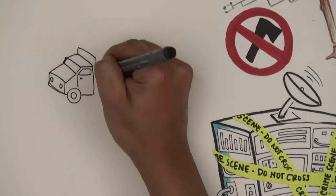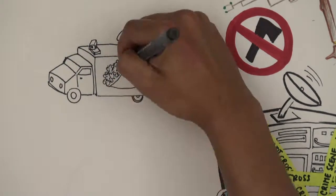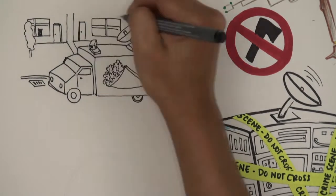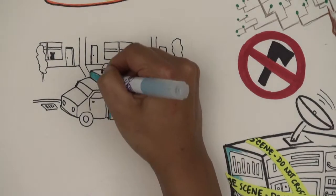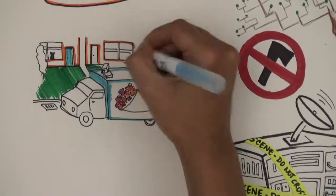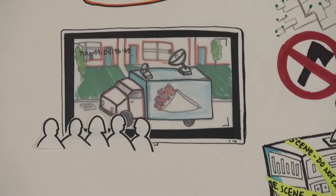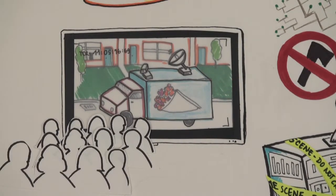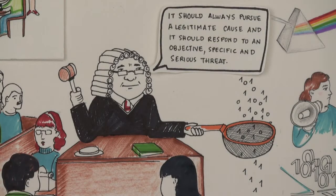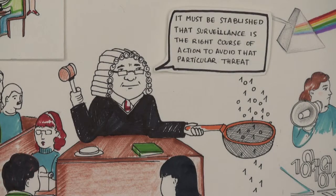5. Surveillance programs. Surveillance programs are legitimate in some cases, but since they have an enormous potential to invade and violate privacy and freedom of expression, they must be carefully designed and rigorously monitored. Surveillance should only be applied in exceptional circumstances. It should always pursue a legitimate cause, and it should respond to an objective, specific, and serious threat. But not only that, it must be established that surveillance is the right course of action to avoid that particular threat.